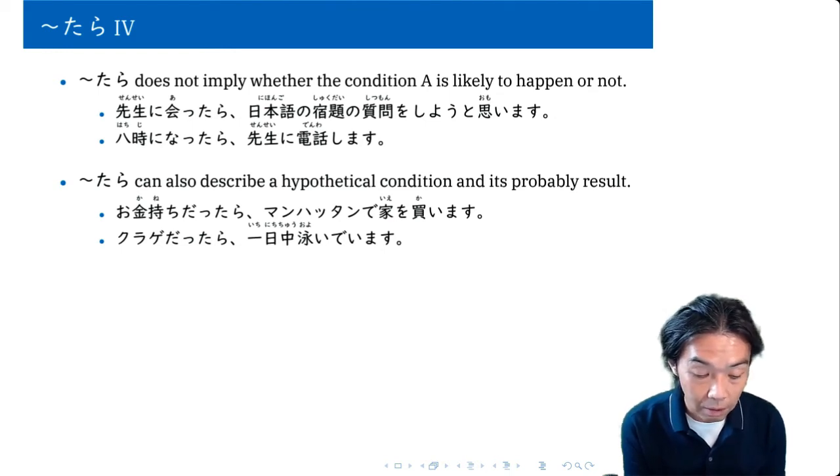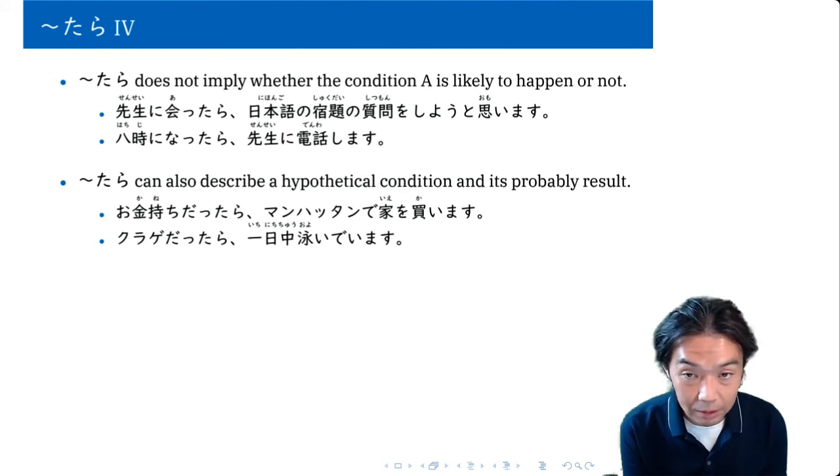If I see the teacher, I ask a question about the Japanese homework. So this one doesn't say anything about whether you're going to meet the teacher or not. It's perfectly neutral and it's just by chance. So you may or you may not see the teacher.